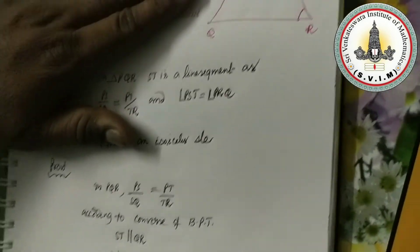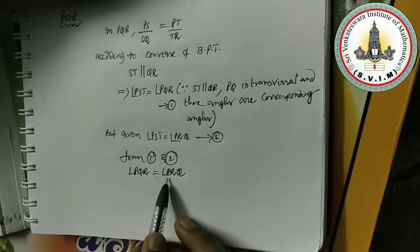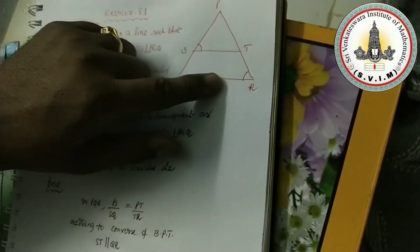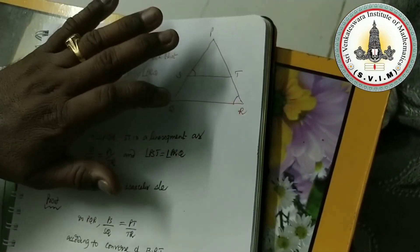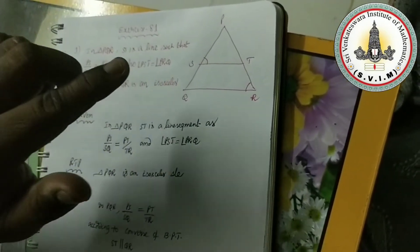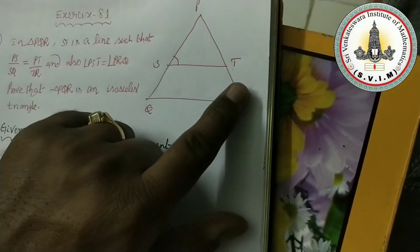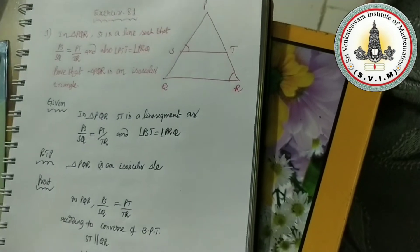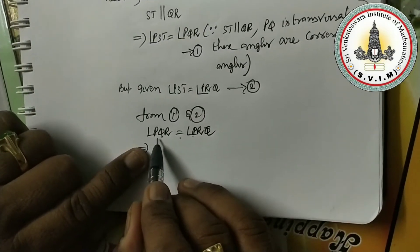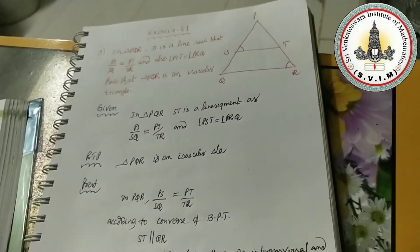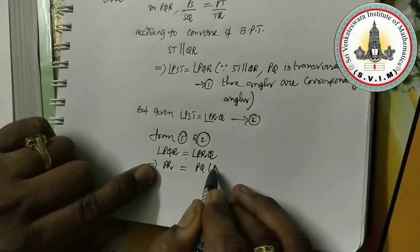In the figure, angle PQR equals angle PRQ — these two angles of triangle PQR are equal. In a triangle, if two angles are equal, the sides opposite to them are also equal. The side opposite to angle PRQ is PQ, and the side opposite to angle PQR is PR. Therefore, PR is equal to PQ.